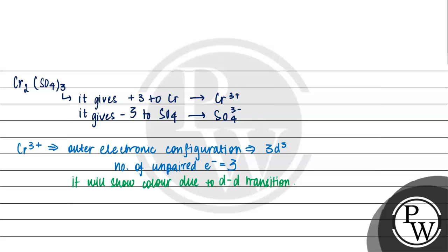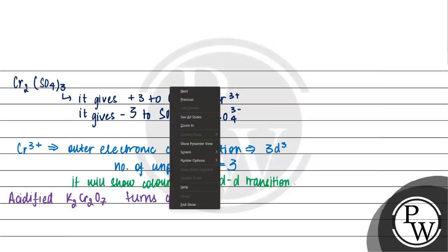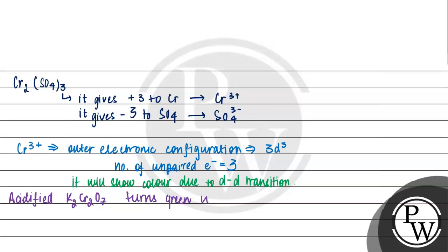We can write the final statement that acidified potassium dichromate K2Cr2O7 turns green when Na2SO3 is added to it. This is due to the formation of Cr2(SO4)3.